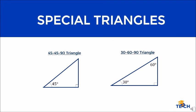For special triangles, we have two triangles: the 45-45-90 triangle and the 30-60-90 triangle. Let's first discuss the 45-45-90 triangle.